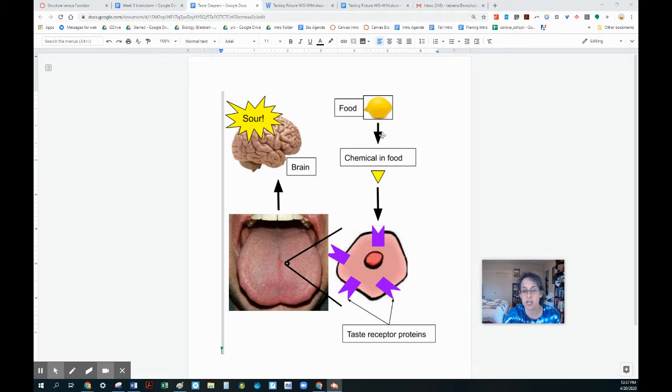Your food is made up of many chemicals, and the chemical that makes a lemon taste sour I've shown here by this yellow triangle. That yellow triangle can fit into a receptor, a protein that is on an individual tongue cell.